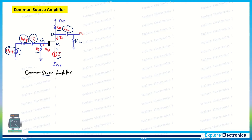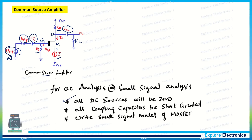To derive the expression for gain and output voltage for the AC signal, we need to perform AC analysis. For this, all DC supply voltages are set to zero, coupling capacitors are short-circuited, and the MOSFET is replaced by its small signal model.